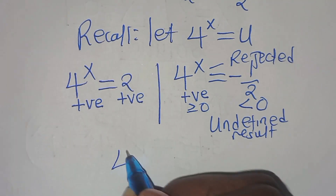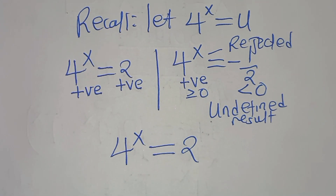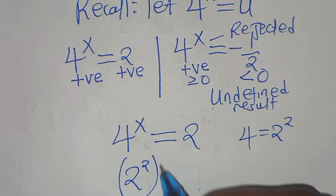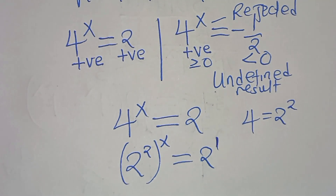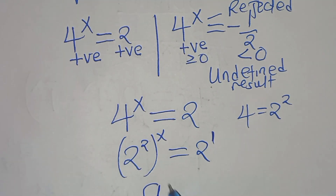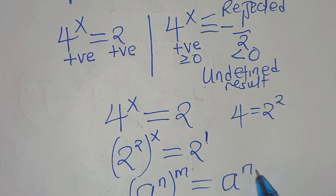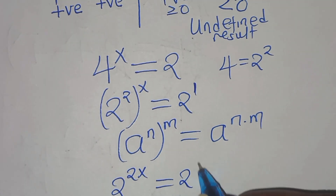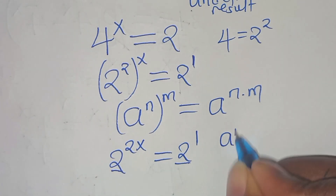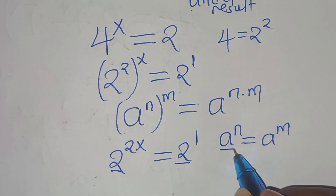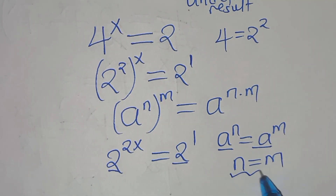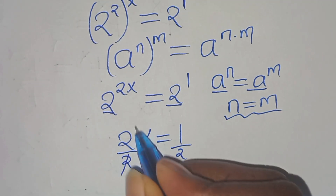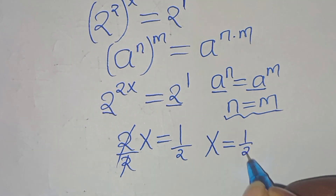Since 4 can be expressed as 2 to the power of 2, we have 2 to the power of 2 raised to the power of x, equals 2. Applying the exponent property a to the power of n raised to the power of m equals a to the power of n times m, we get 2 to the power of 2x, equals 2 to the power of 1. Since the bases are equal, 2x equals 1, and dividing both sides by 2 gives x equals 1/2.